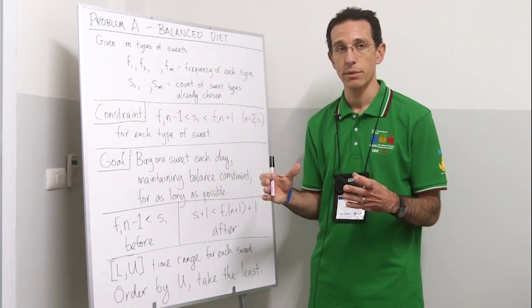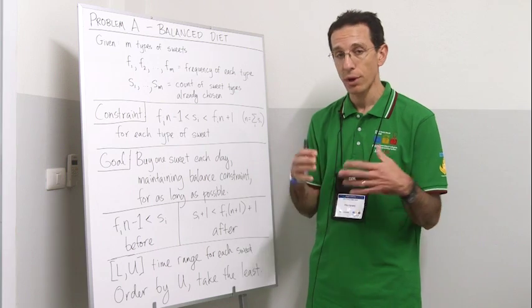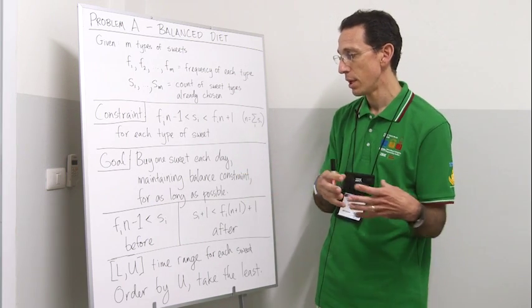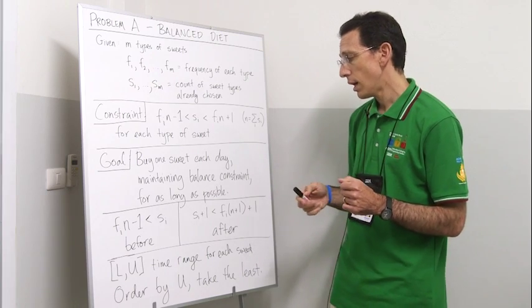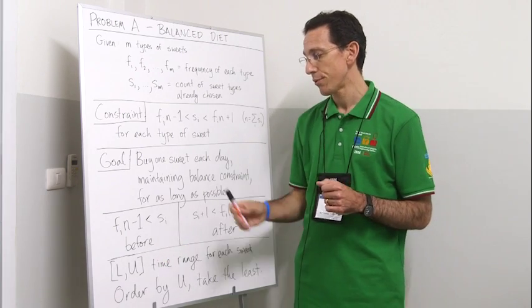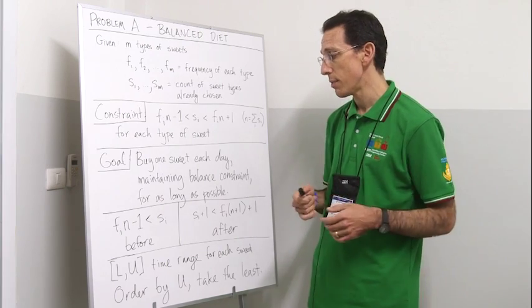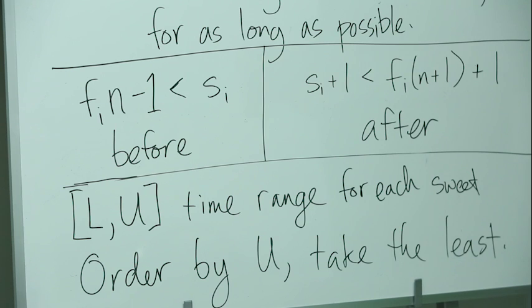That may overlap with the current time, but may be forward in time and possibly backward in time if we were out of balance. Those lower and upper bounds for each sweet tell us when Danny may pick up that type of sweet and eat it and still maintain balance.